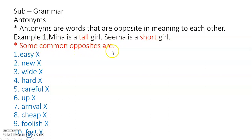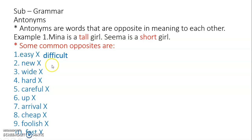Some common opposites — the ones we use every day. The first one is easy. The opposite of easy is difficult. Next, new — we have already done this in English. The opposite of new is old. Opposite of wide: the road is wide and the opposite is narrow.